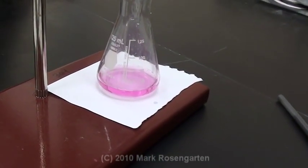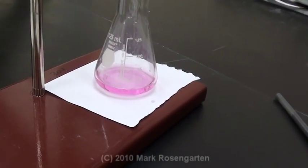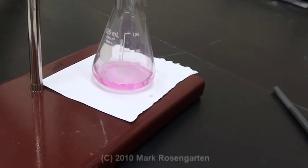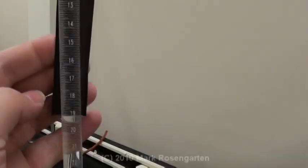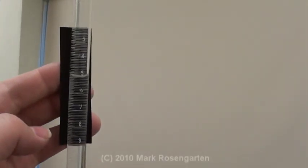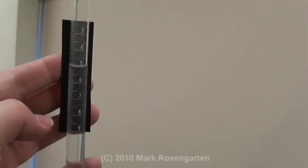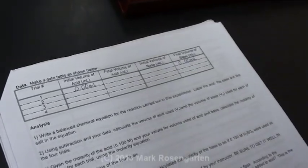Now that you've got the correct color, you know your solution has been neutralized. So now you're going to use the black piece of paper and you're going to hold it up so that you can more easily read the level of the liquid in the burette. And then record your data for trial one.